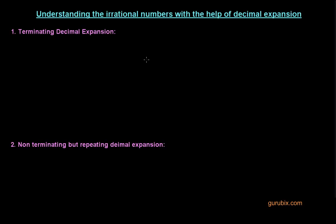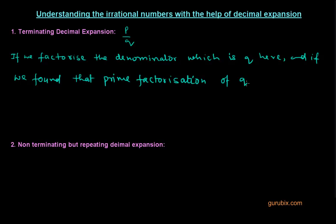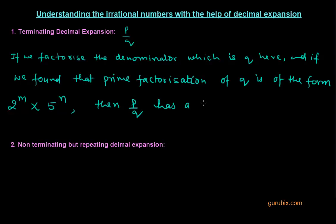As you have studied in previous classes, there are three types of decimal expansion of rational numbers. First, Terminating Decimal Expansion. Suppose we have a rational number P over Q, and if we factorize Q — the denominator — and we find that the prime factorization of Q is of the form 2 raised to M multiplied by 5 raised to N, then P over Q has a terminating decimal expansion.